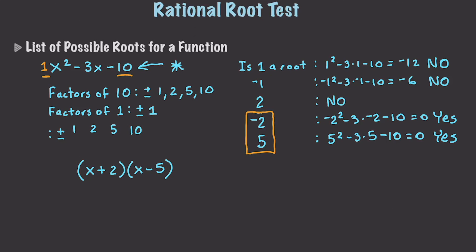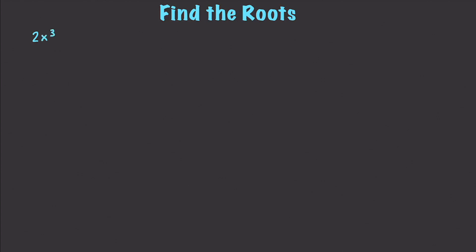So now to finish this off, I'm going to combine both the rational root test and Descartes' rule of signs with some of the other things you've already learned to solve a more complicated equation. This time we're going to solve 2x to the third minus 12x squared plus 15x minus 25. The very first thing I want to do is find the number of positive roots. As I go through this, how many times am I changing signs? I'm changing signs here, here, and here again. So that means I have either 3 or — remember subtract 2 — 1 positive root.